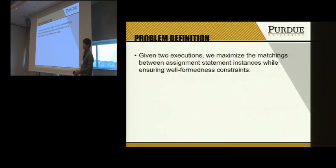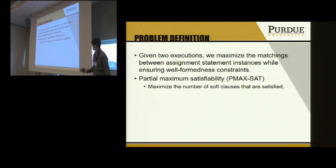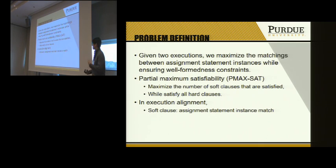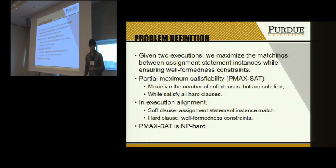We can define our problem as maximizing the matchings between assignments while ensuring the previous constraints. This becomes a Partial Maximum Satisfiability (PMaxSAT) problem, where assignment matches become soft clauses and wellformedness constraints become hard clauses. However, PMaxSAT is NP-hard, so we present an algorithm to approximate the result.